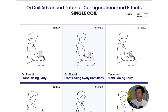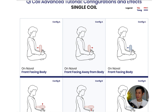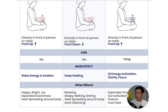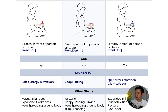Here's the chart. Let's start with a single coil. In the legend, the yin coil is red and the yang coil is blue. Looking at the main effects: if you use the yin coil in certain configurations, you get a raising of energy and you get to awaken yourself. In other configurations, you get deep healing. And if you use the yang coil in its configuration, you get qi energy activation, clarity, and focus.